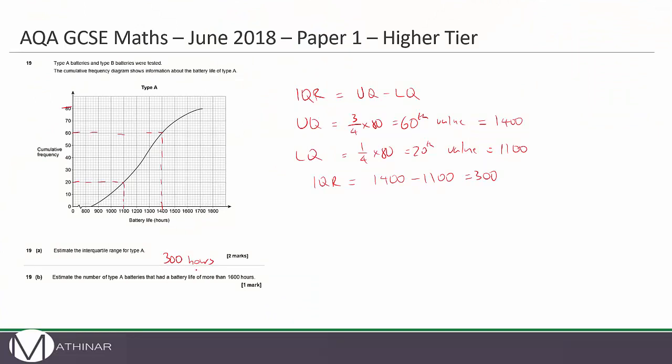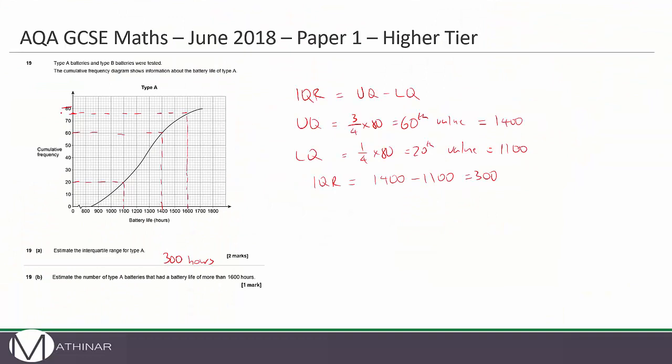19B. Estimate the number of type A batteries that had a life of more than 1,600 hours. So we find 1,600 hours, which is here. This time we go up first. So we touch the graph, and then we go across. Okay, and I would say that there is about 76.